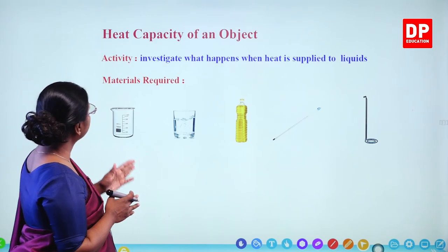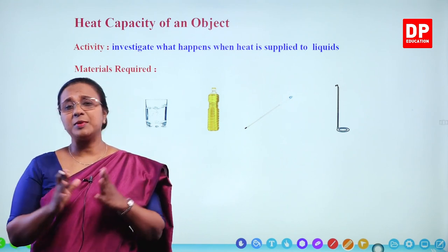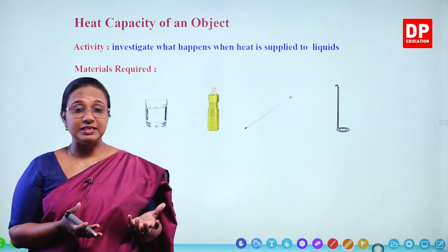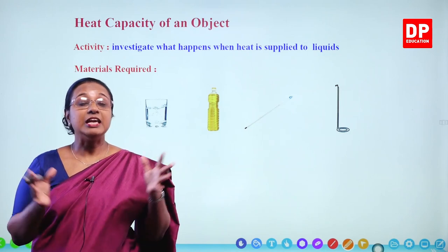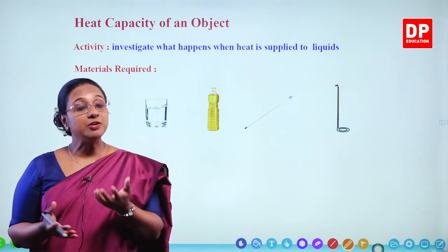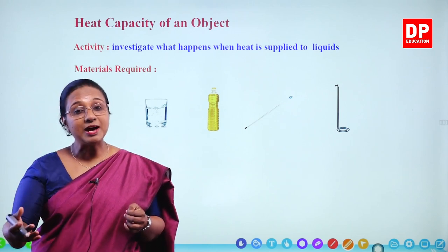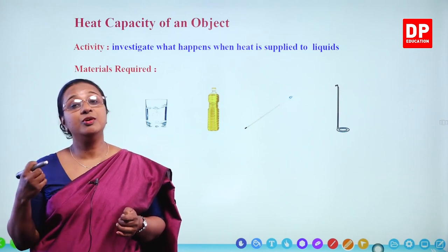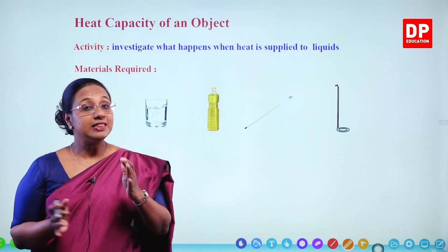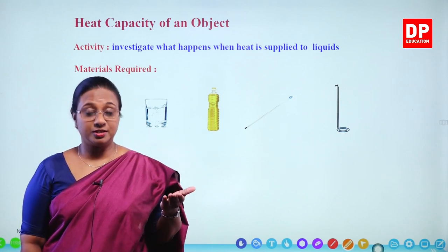In today's lesson I am going to discuss heat capacity of an object. To understand heat capacity, consider examples from day-to-day life. Say you have a metal lid, a plastic lid, and a piece of wood. If all these are kept in direct sunlight for about an hour or two, you won't be able to touch the metal lid with bare hands — it will be hot. Whereas plastic and wood are easier to pick up. That is because the ability of those materials to absorb heat is different. That is where we need to understand heat capacity — the capacity of an object to become heated up.